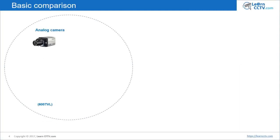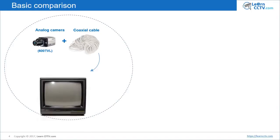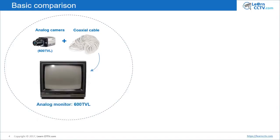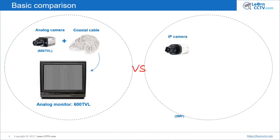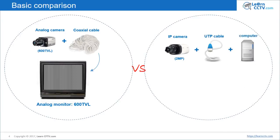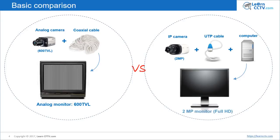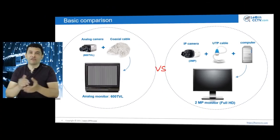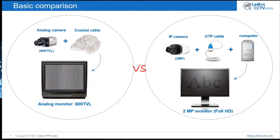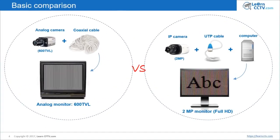Let's continue with the basic comparison. When you have an analog camera with 600 TV lines, you connect it via a coaxial cable to a monitor. This monitor must also have 600 TV lines or higher resolution to be compatible with your camera. Comparing this to a digital system: you have an IP camera with 2 megapixels, connect your cable to a computer, and then you have your image on screen — a 2 megapixel monitor, which is the same as Full HD resolution.